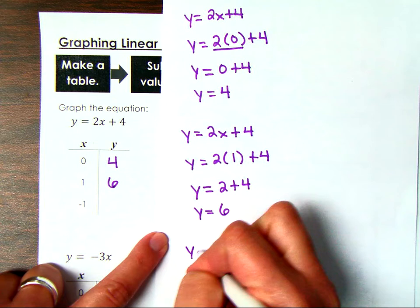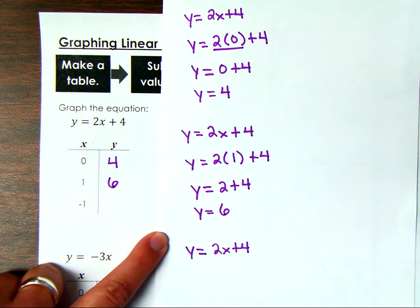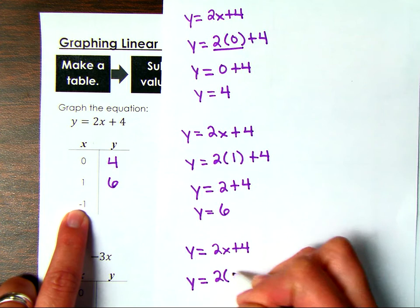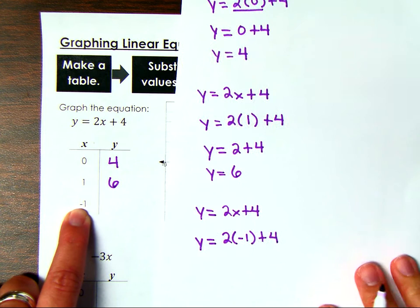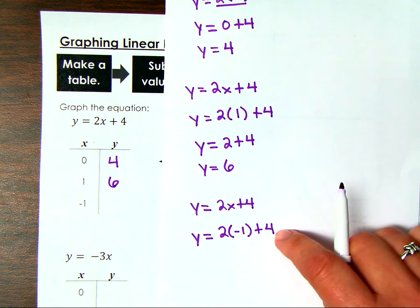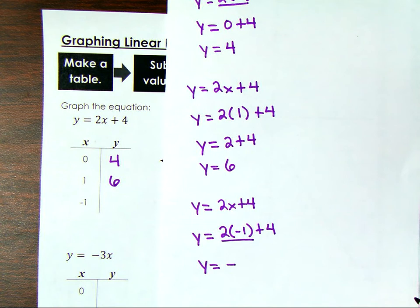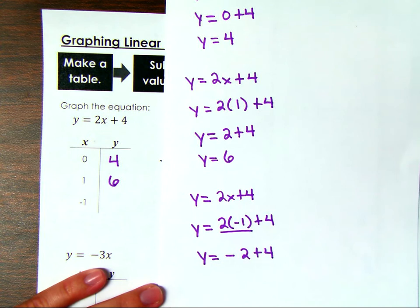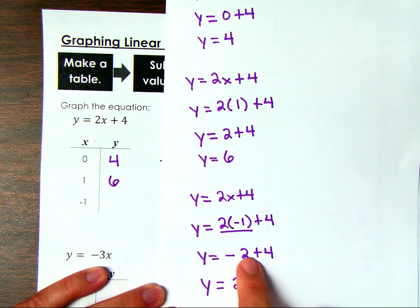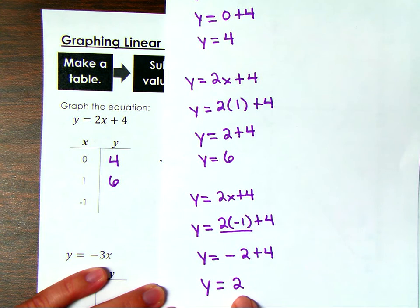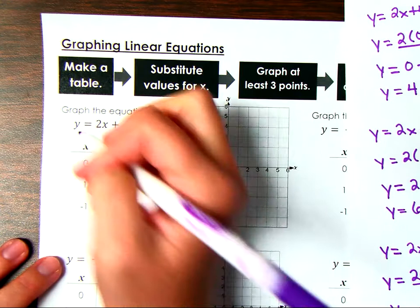For the last ordered pair, y equals 2x plus 4. We always want to start with the equation. Now we're plugging in negative 1. It's very important that you work step by step — write the equation, substitute, and then solve with order of operations. We multiply first: a positive times a negative is a negative. 2 times 1 is 2, so we get negative 2, then bring down the plus 4. Combining integers: 4 minus 2 is 2, and there are more positives. So when x is negative 1, y is positive 2.